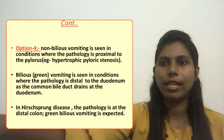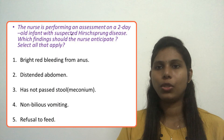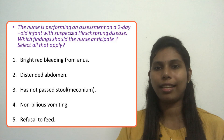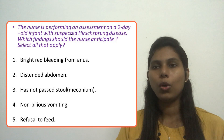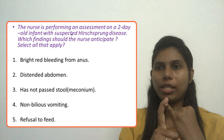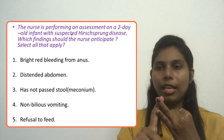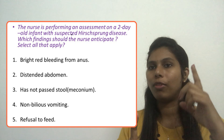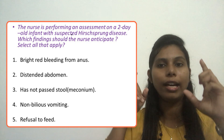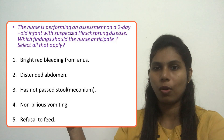The last option says refusal to feed — that is a correct answer, as the client exhibits feeding difficulty or refusal to feed. So our correct options are option two, option three, and option five. We also studied why option one and option four are wrong answers and in which conditions those findings would be correct.